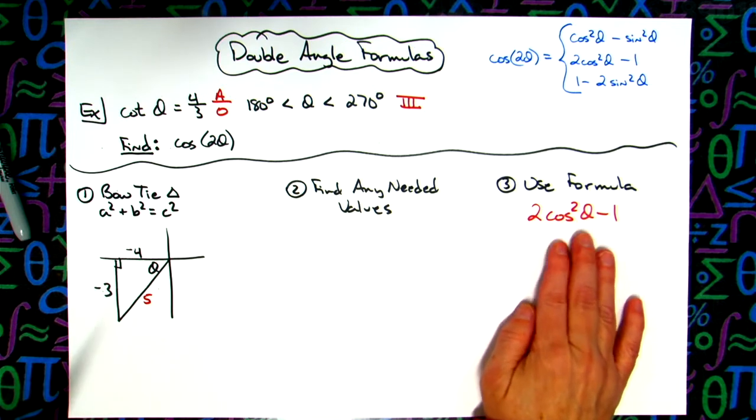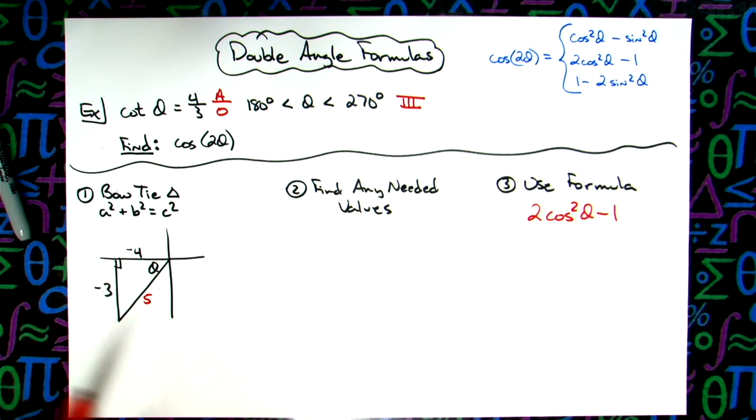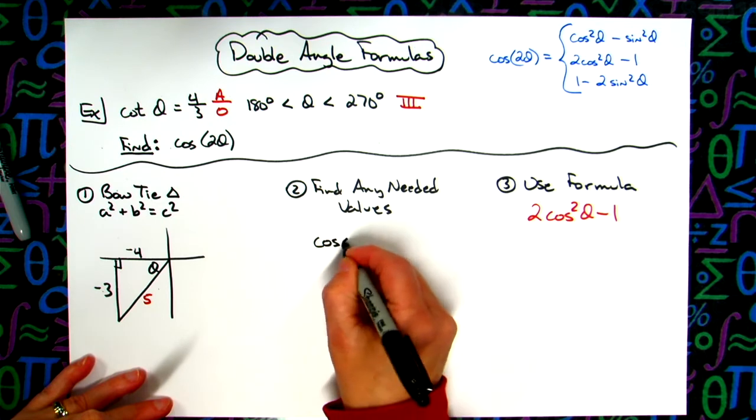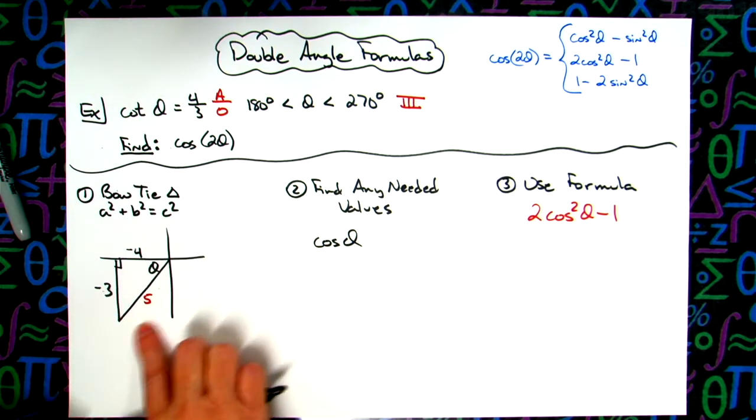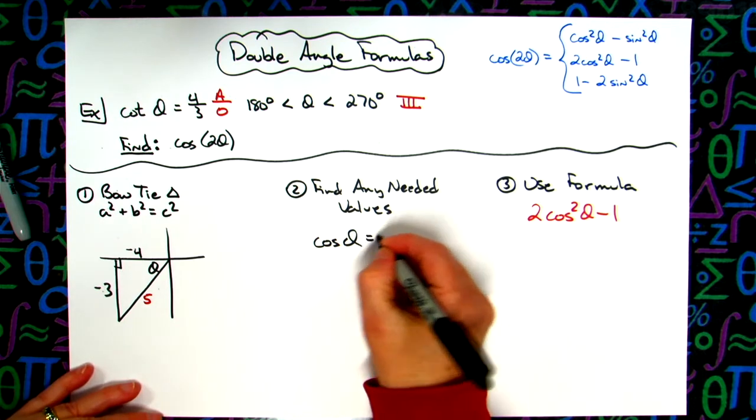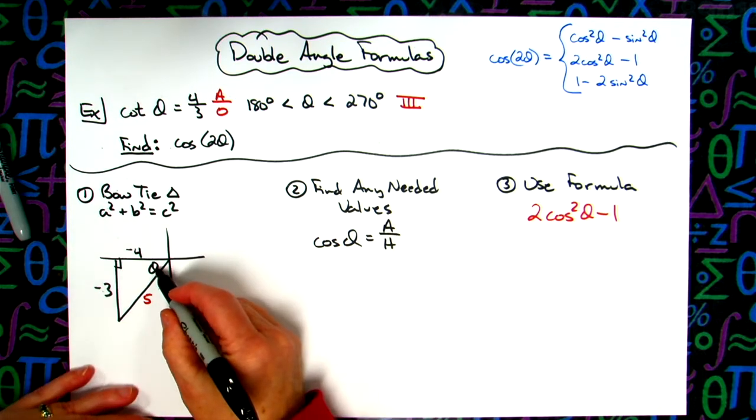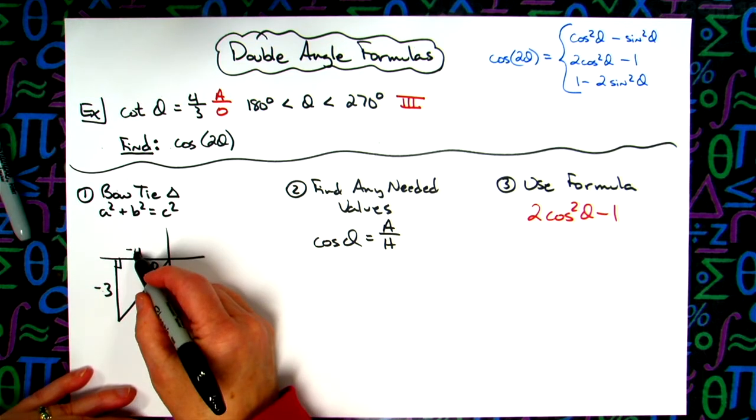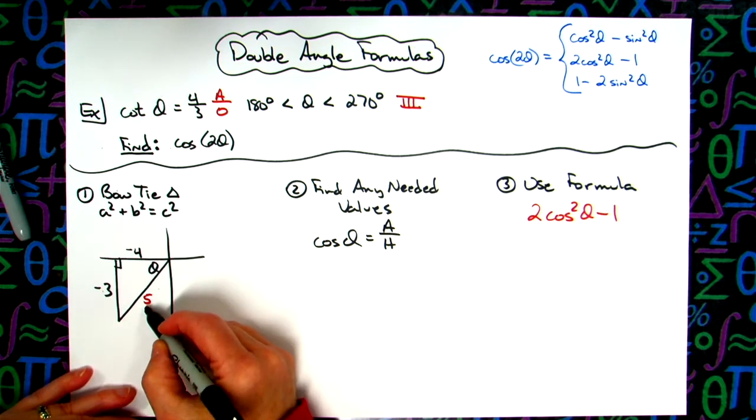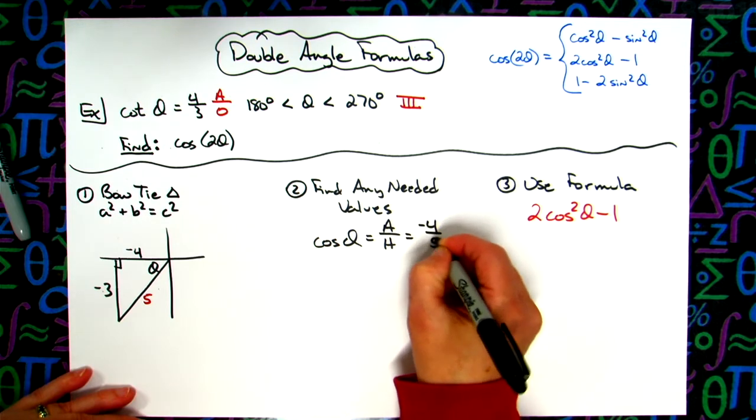Now the only value I need is cosine. So that's my step two. So I'm going to find that cosine of θ value. I'm going to use the bowtie triangle that I drew right here. Cosine is adjacent over hypotenuse. So my adjacent side is the negative four. My hypotenuse is the five. So that's going to be a negative four-fifths.